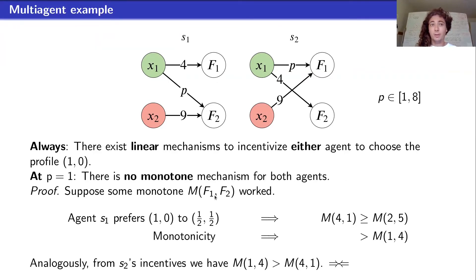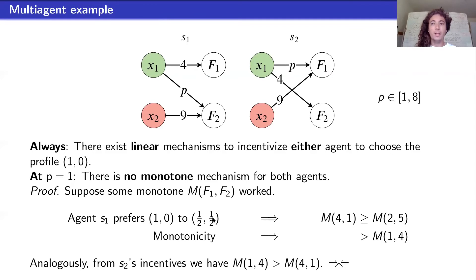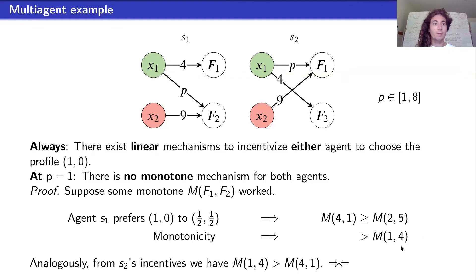I want to go through the proof that no monotone mechanism exists at P=1, because it's instructive to the main theorem. Suppose there is some monotone mechanism M — not necessarily linear. Consider the profile (1,0), which we'd like agents to invest effort into, and the inadmissible profile (½,½). For agent S1 to prefer (1,0) over (½,½), we need M(4,1) ≥ M(2,5), since those are the respective feature vectors. Monotonicity then requires M(2,5) > M(1,4). Symmetrically, for S2 to prefer the admissible profile, we get M(1,4) > M(4,1). This gives a contradiction.